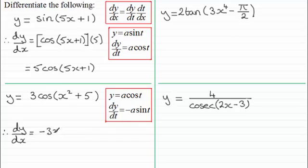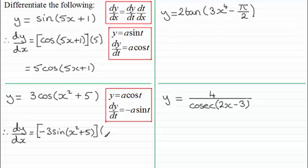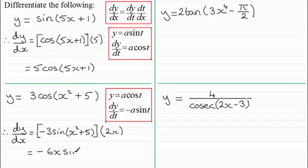So we have minus 3 sine of all of x squared plus 5, and then we multiply this by dt/dx. Differentiating x squared plus 5 with respect to x gives us 2x. Simplifying: minus 3 times 2x gives us minus 6x, and then we've got the sine of all of x squared plus 5.